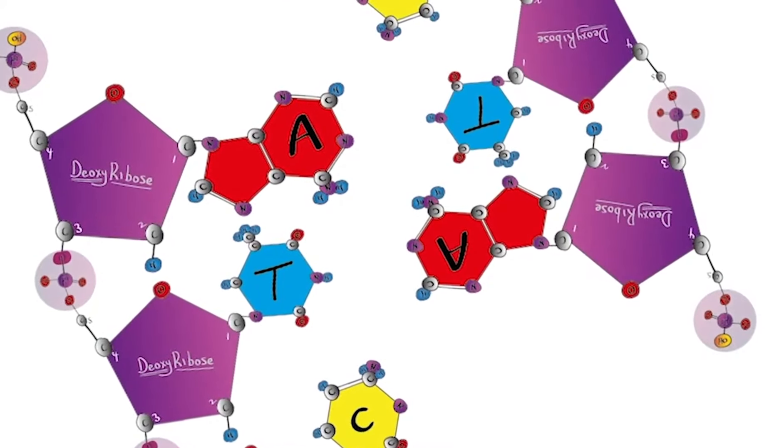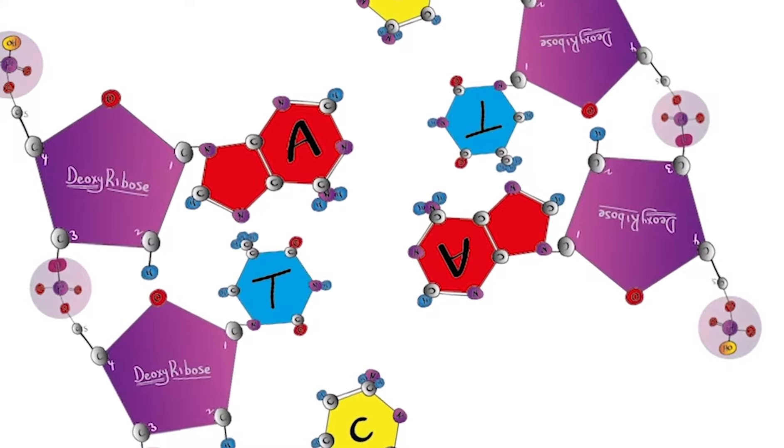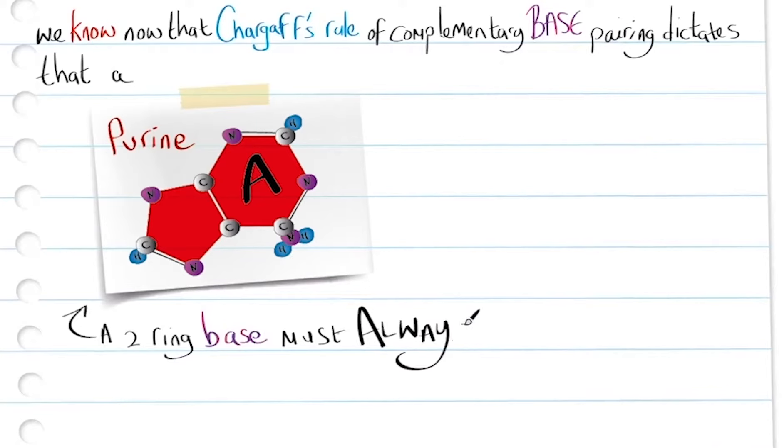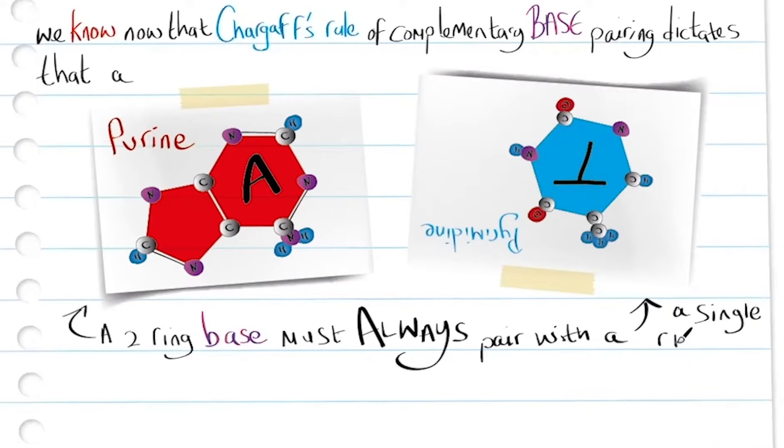We know that Chargaff's rule of complementary base pairing dictates that a purine, that two ring base, must always pair with a pyrimidine, a single ring base.